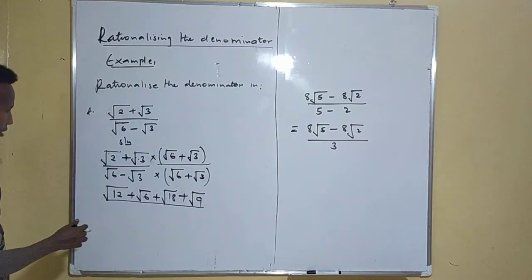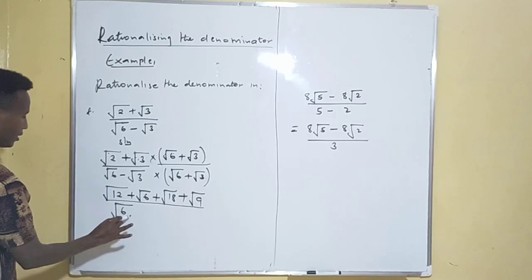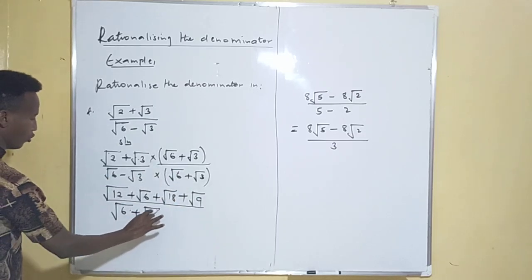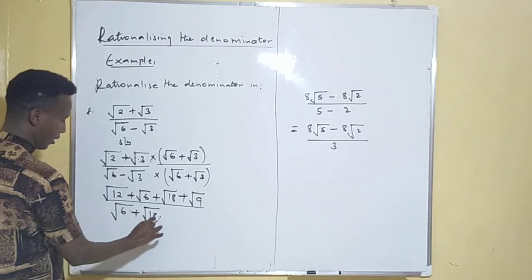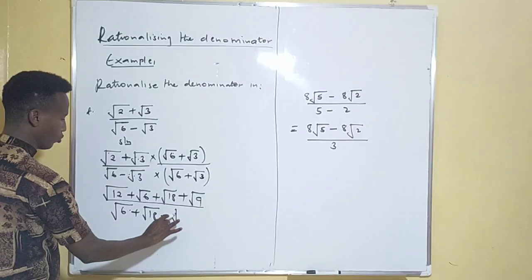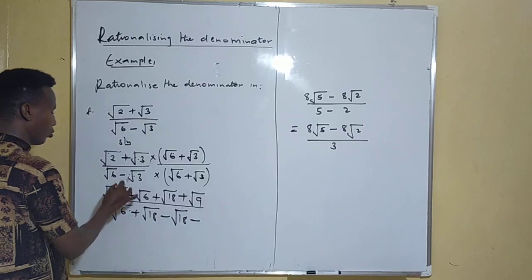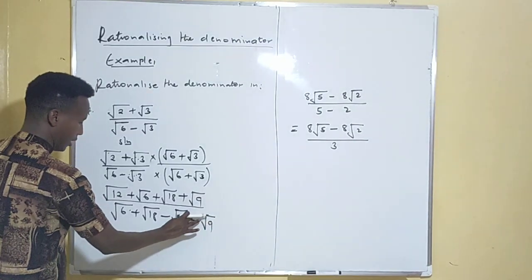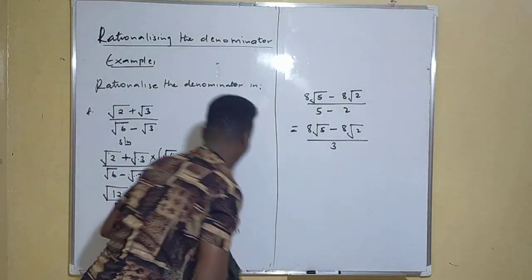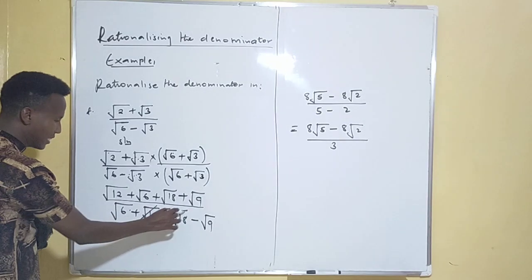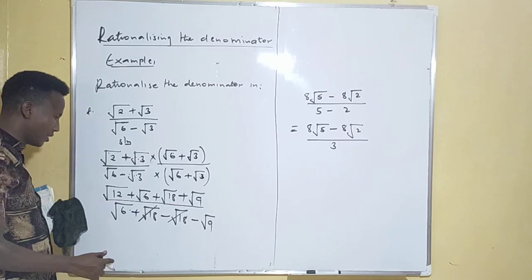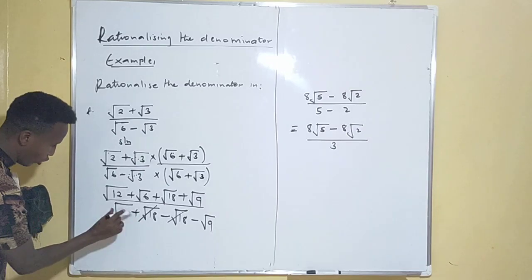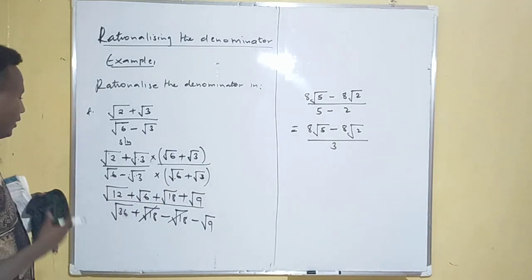In the denominator side, the two root 18 terms cancel each other (one positive, one negative), as do the root 9 terms. Root 36 becomes 6, and root 9 becomes 3, so the denominator simplifies to 6 minus 3 equals 3. In the numerator: root 12 expands as root(4×3) giving 2 root 3; root 6 stays as root 6; root 18 expands as root(9×2) giving 3 root 2; and root 9 equals 3. So the numerator is 2 root 3 plus root 6 plus 3 root 2 plus 3.